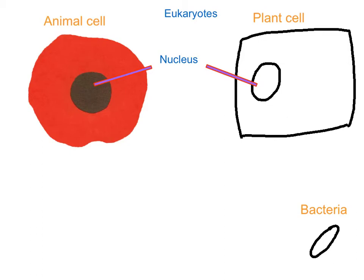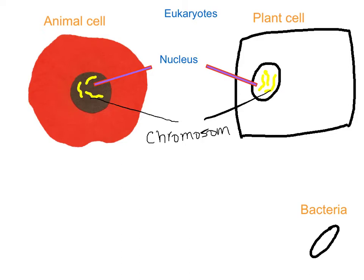Animal cells and plant cells both have a nucleus — that's what we can see right here. But bacteria has no nucleus inside. So plant and animal cells are called eukaryotes and bacteria are called prokaryotes because they don't have a nucleus. Now let's go into a little bit more detail. Inside the nucleus of both plant and animal cells, we have these structures — super important. Those are chromosomes.